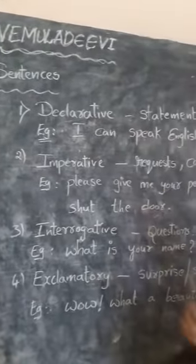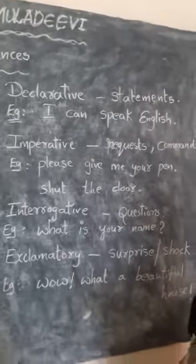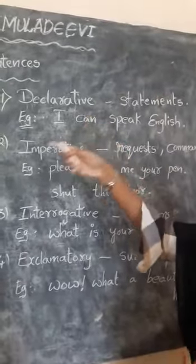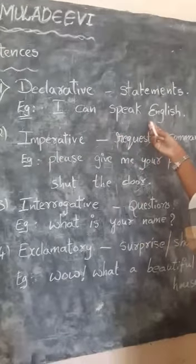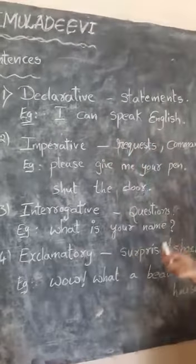Declarative sentence is nothing but statements. Any type of information you transfer is done in declarative sentence. For example, I go to school, I can speak English. These are all statements. The sun rises in the east. These are all statements.